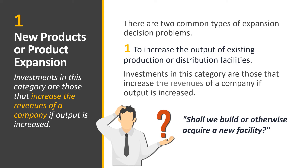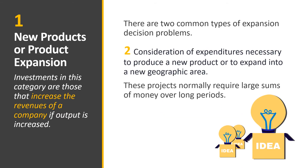If you want expansion or another distribution facility, it's either you construct a new facility or building, or you acquire or rent a building for the additional production. The engineer must study which option saves more money or is more economical. The second type of expansion considers expenditures necessary to produce a new product or expand into a new geographic area. These projects normally require large sums of money over long periods.